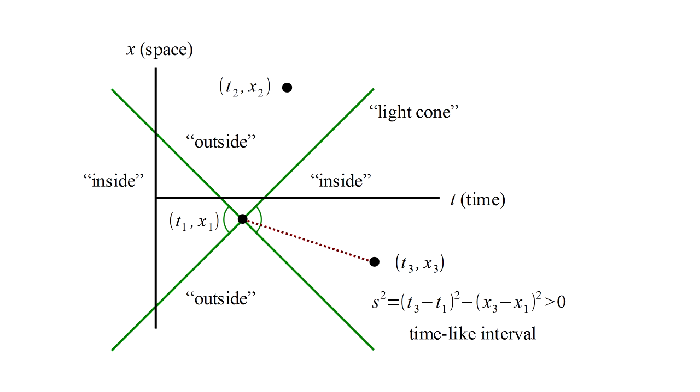Event 2, however, is outside the light cone. It's not possible for a clock to travel between these two events, and s squared would actually be a negative number. However, the negative of that is a positive number, which we call sigma squared.